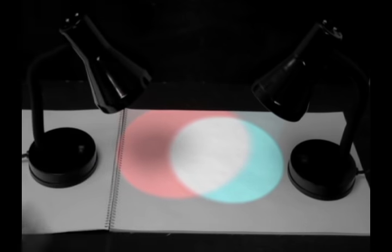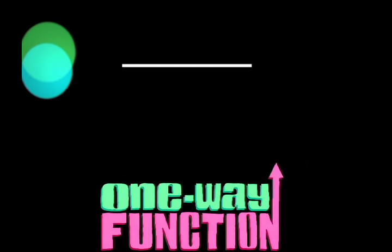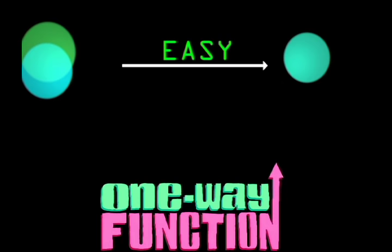In this example, we assume that mixing colors is a one-way function, because it's fast to mix colors and output a third, and it's much slower to undo.